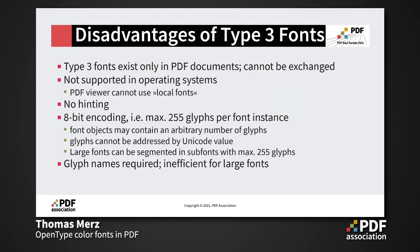Type 3 fonts also have some disadvantages. They exist only in PDF documents — it's not a standalone format you could use for exchanging fonts or installing in the operating system. A PDF viewer cannot access local fonts in Type 3 format; they just exist inside PDF documents and nowhere else. They don't support hinting, so text display at small sizes may not be as nice as with regular OpenType fonts. The big technical restriction is that Type 3 supports only 8-bit encodings, meaning you are limited to a maximum of 255 glyphs per font instance, though implementation tricks like sub-fonts can work around this.